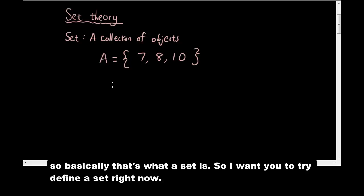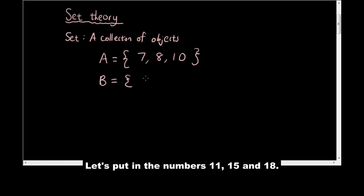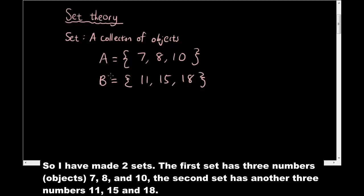So I want you to try and define a set right now. Okay, so hopefully you have defined another set. I'm going to define set B as - let's put in the numbers 11, 15, and 18. So I've made two sets. The first set has three numbers: seven, eight, and ten. The second set has another three numbers: 11, 15, and 18.